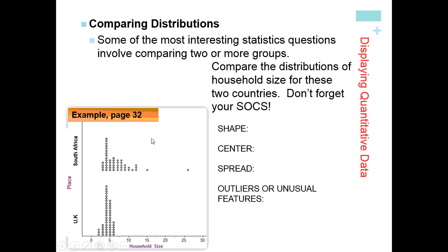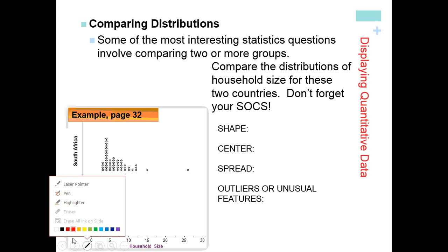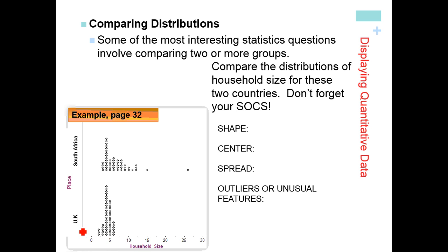We start with shape. It looks like South Africa has more of a skewed-to-the-right shape, with outliers down here, whereas the UK's shape is quite symmetric.